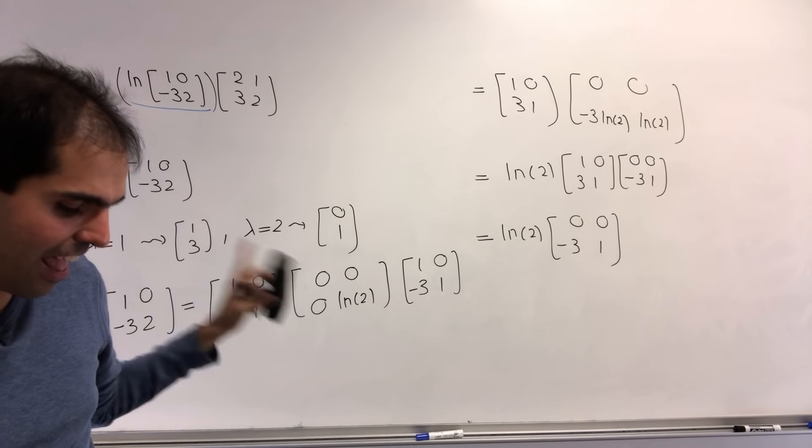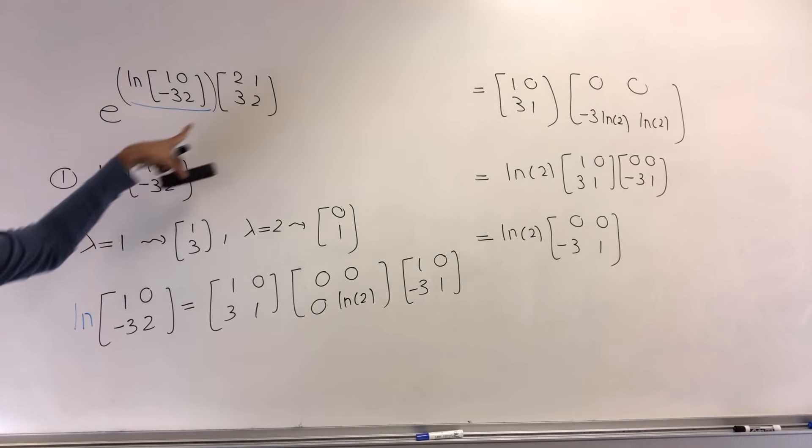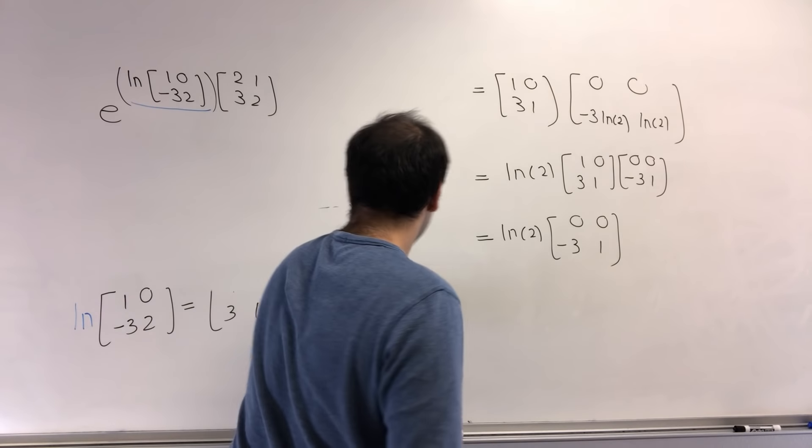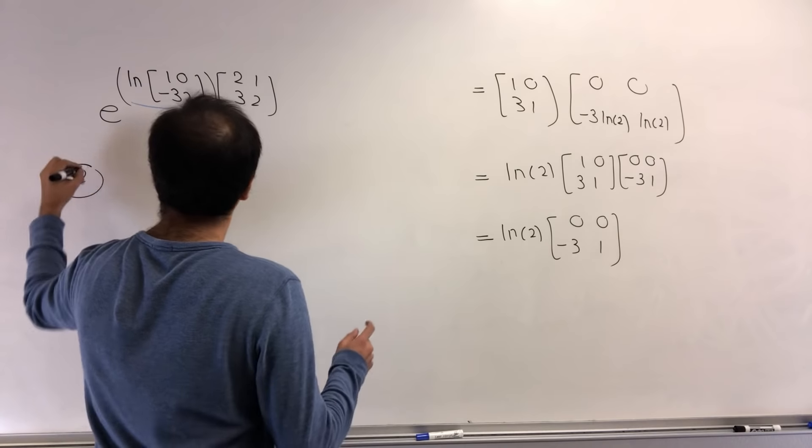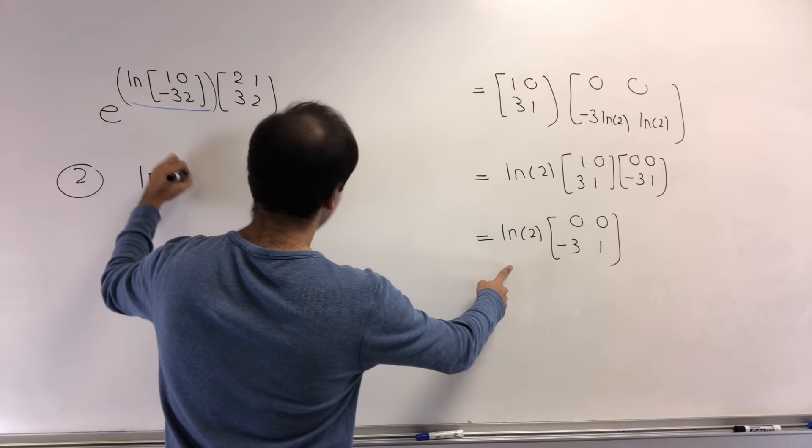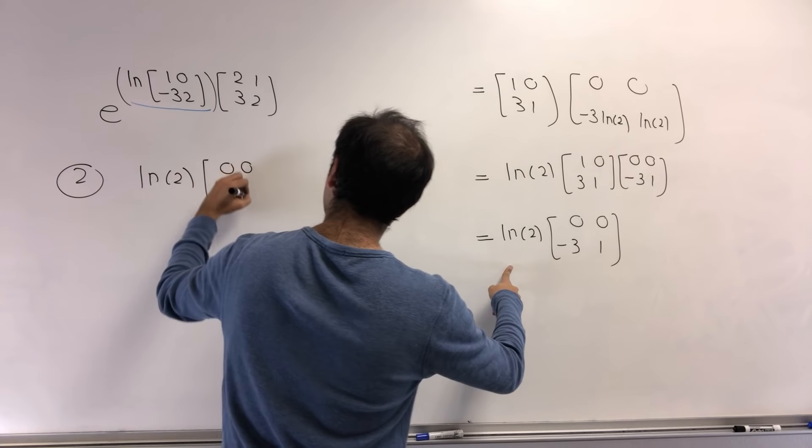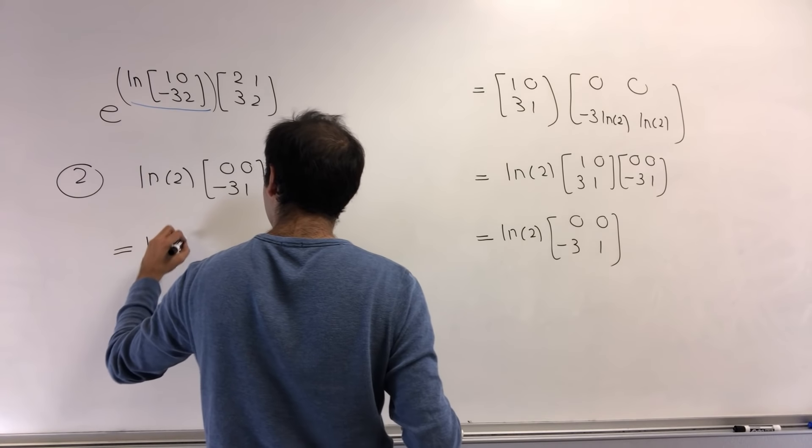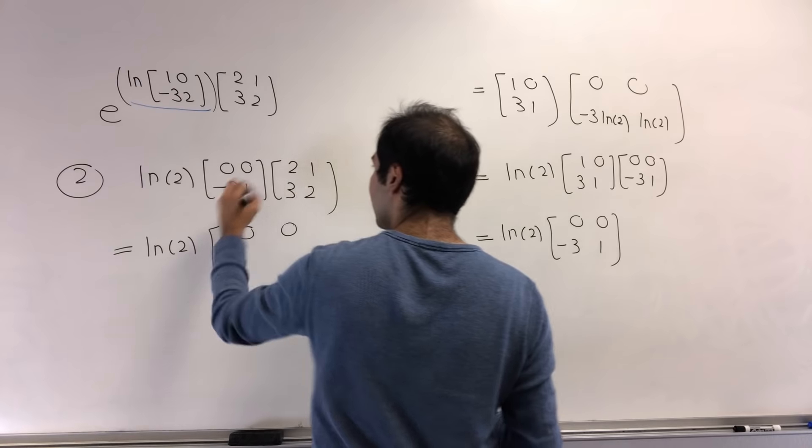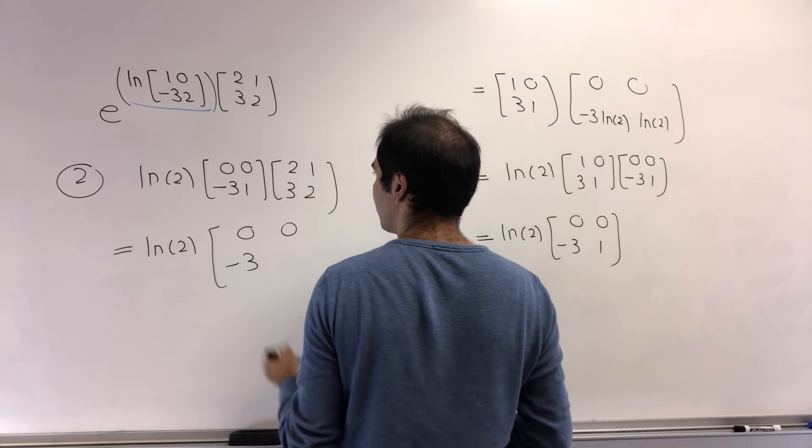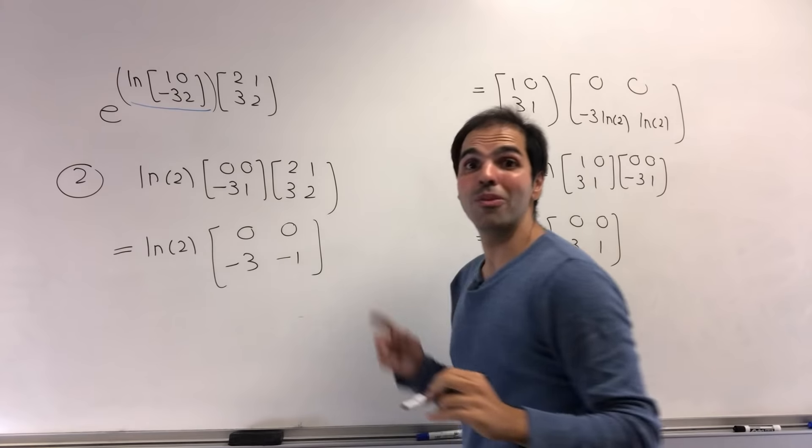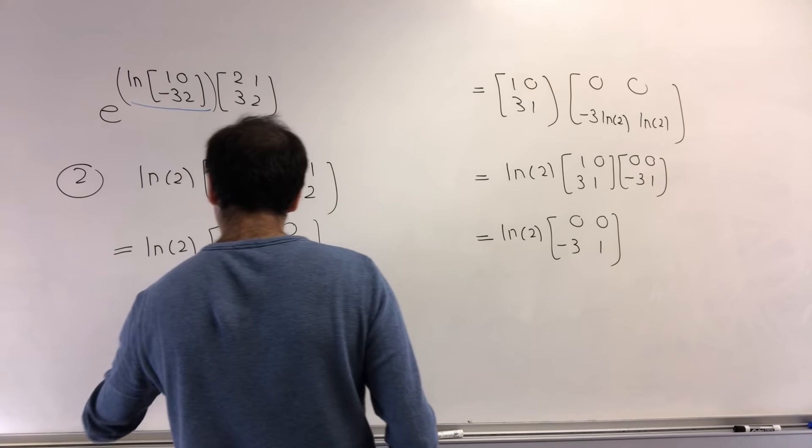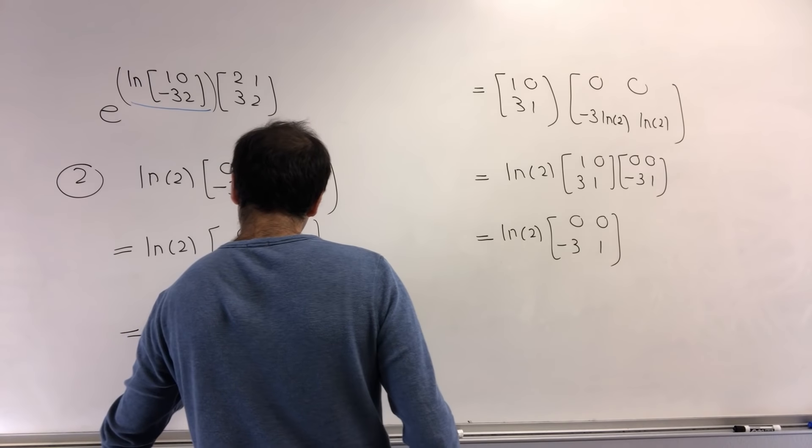All right, that is very good. We found the ln part, and all we want to do now is multiply this by 2, 1, 3, 2. So in our second step, let's do that. Now, all we want is ln of 2 times 0, 0, minus 3, 1, and then times 2, 1, 3, 2. And you can just calculate this, so this is ln of 2. 0, 0, minus 6 plus 3, that's minus 3. And minus 3 plus 2, that's minus 1. So almost the same matrix, but just be careful of this minus 1. That is just 0, 0, minus 3 ln of 2, and minus ln of 2.